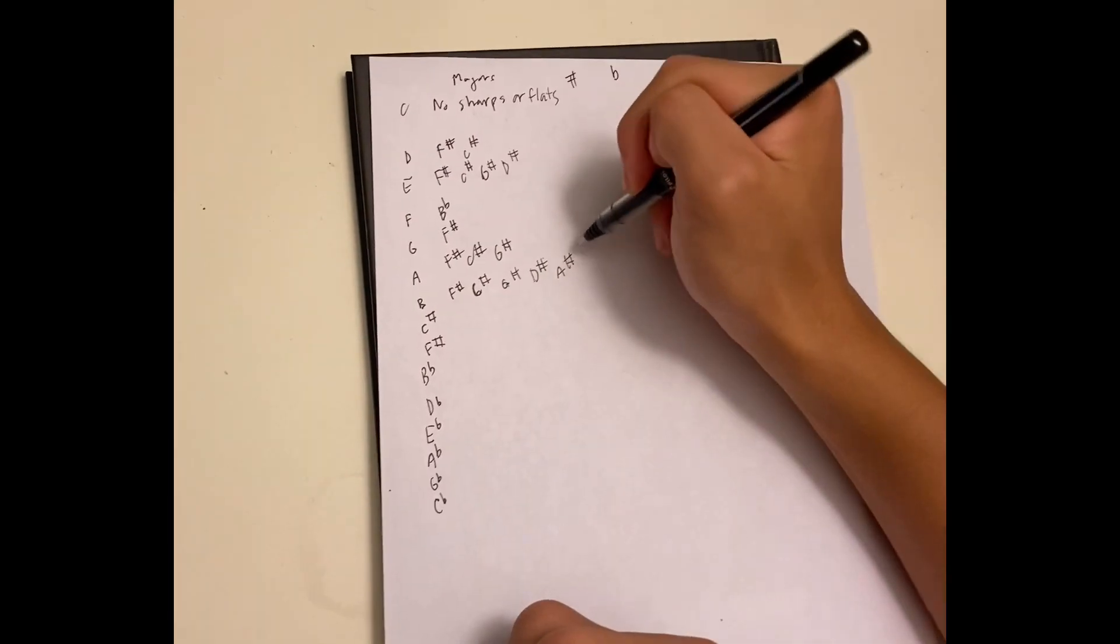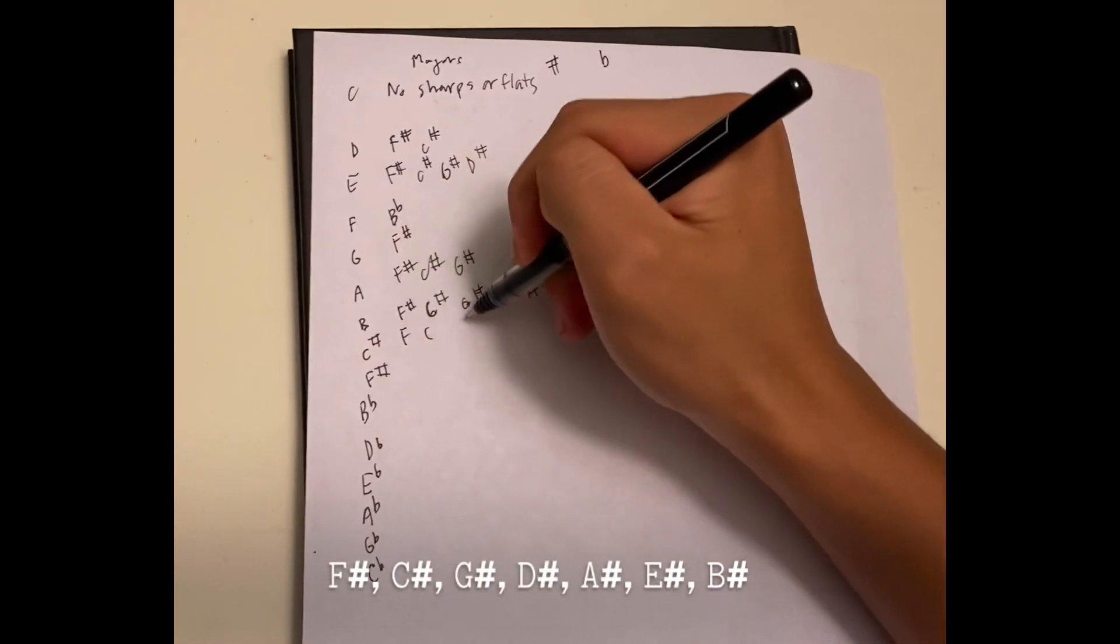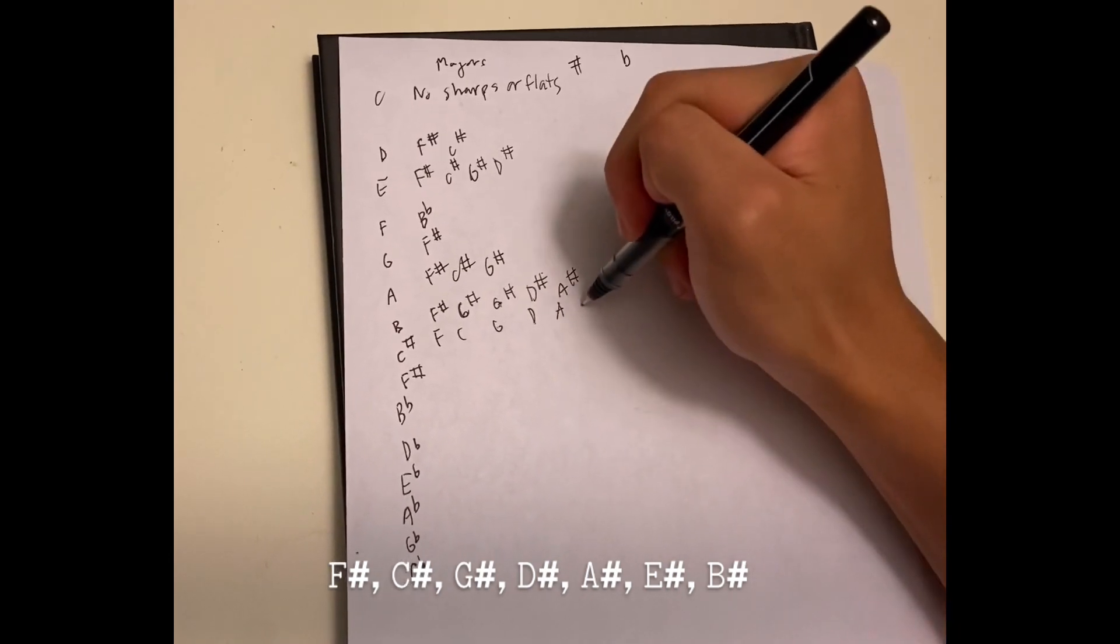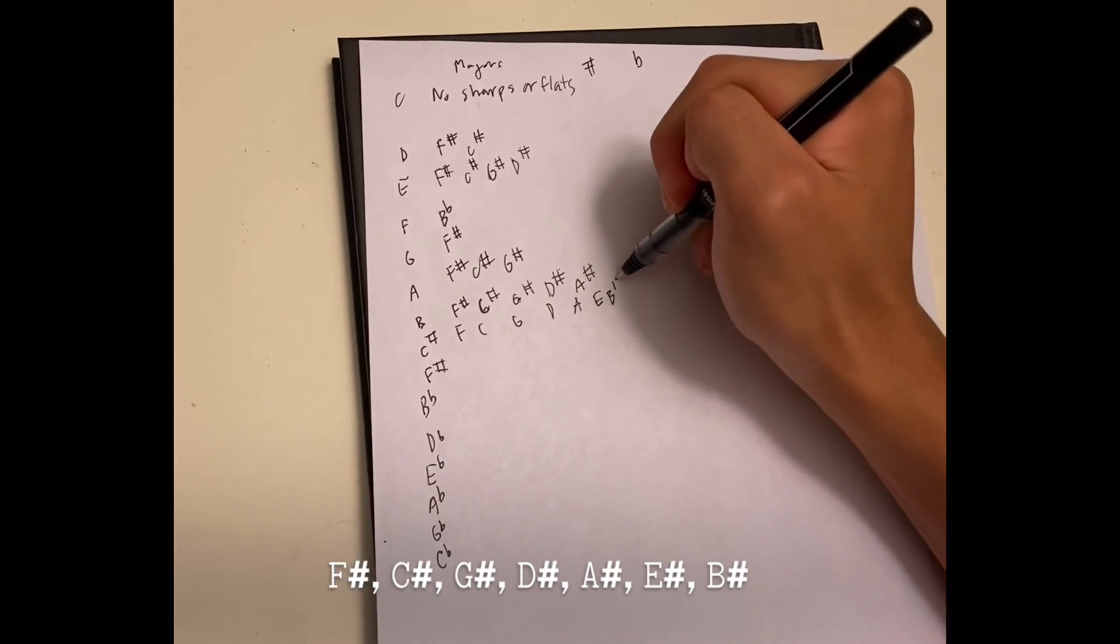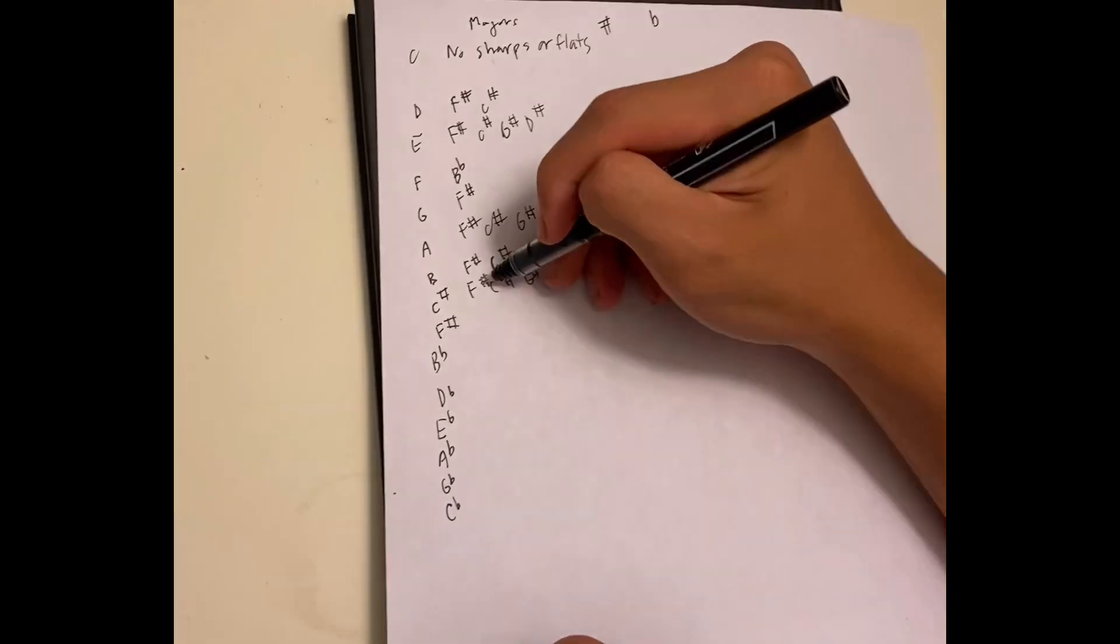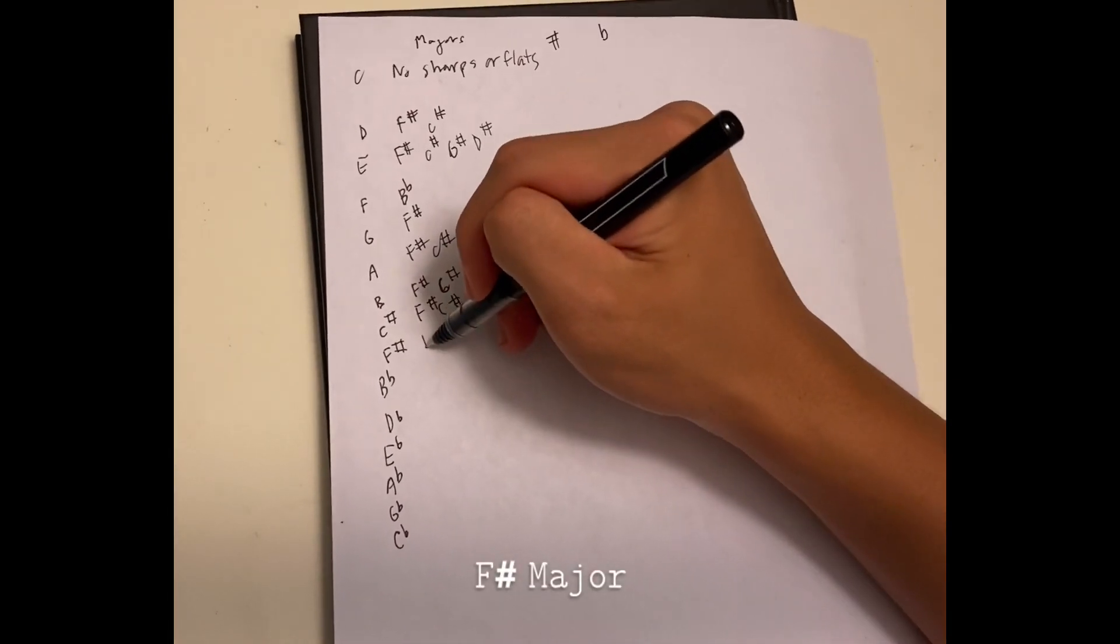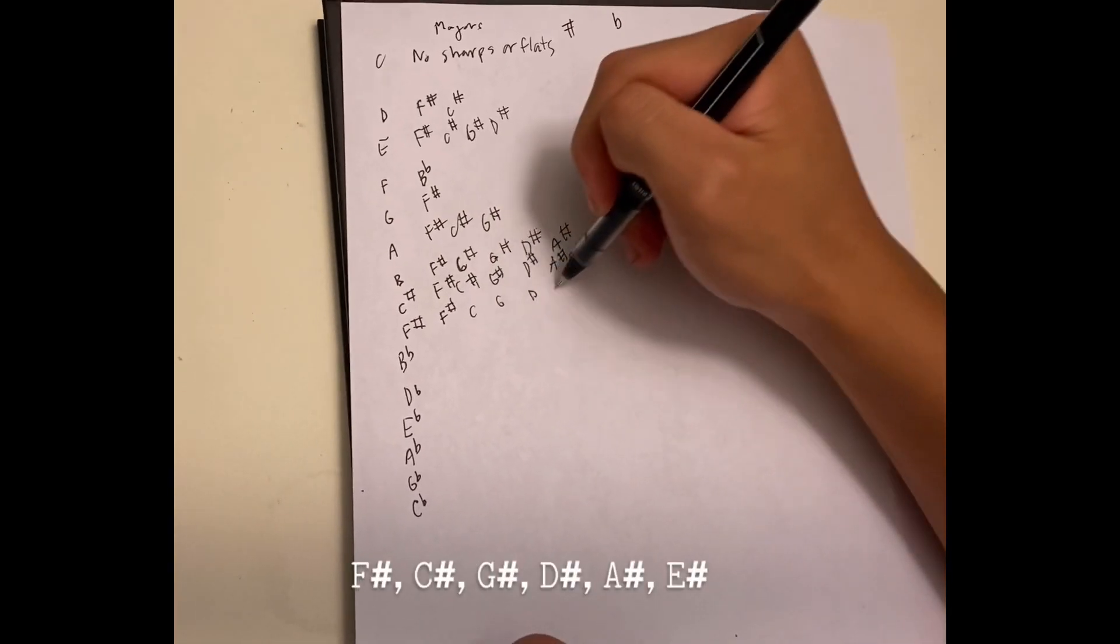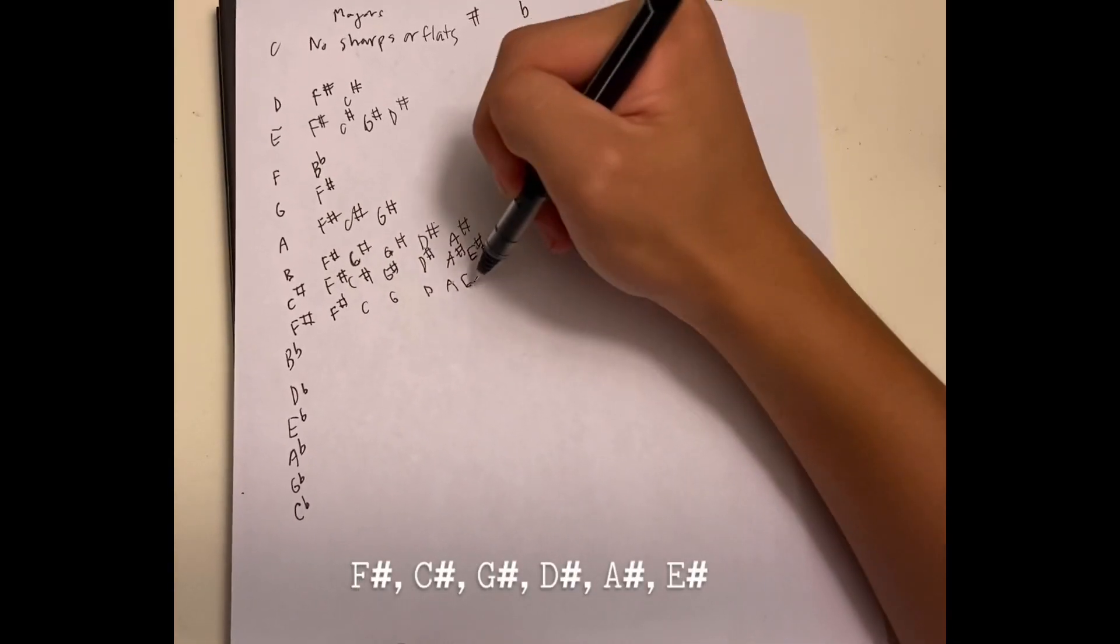C sharp major. It's F, C, G, D, A, E. These are all sharps. F sharp major: F sharp, C, G, D, A, E. I'm not going to write all the sharps out. B flat major: B flat, E flat.